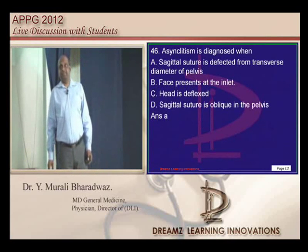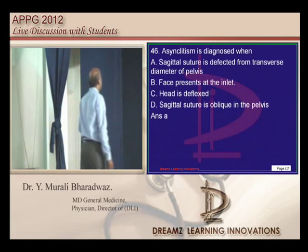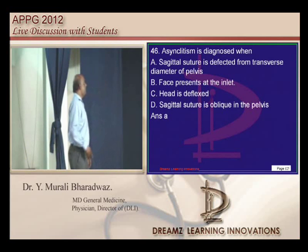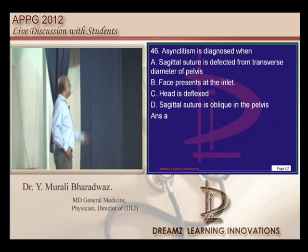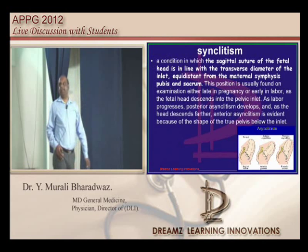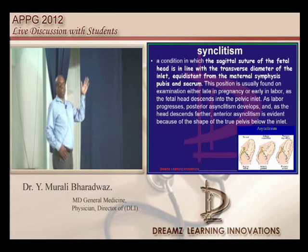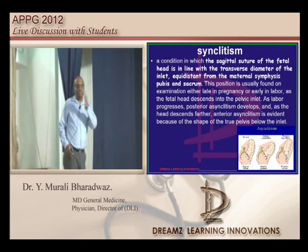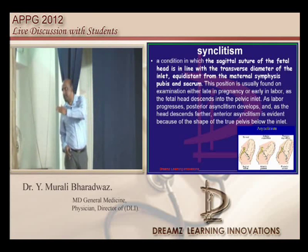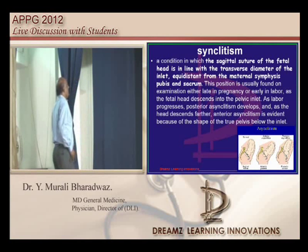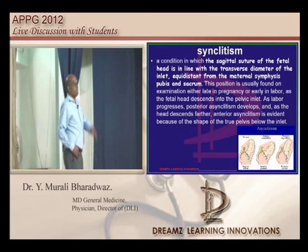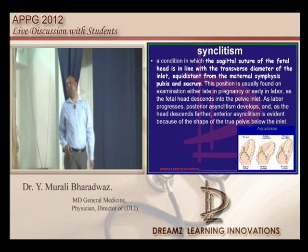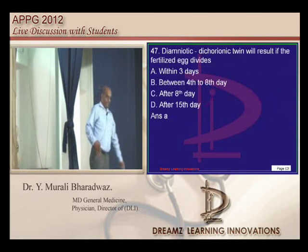Asynclidism — the sagittal suture of the fetal head is normally in line with the transverse diameter of the inlet, equidistant from the maternal symphysis pubis and the sacrum. If it deviates toward either the symphysis pubis or the sacrum, you call it asynclidism. It is the sagittal suture deviated away from the transverse diameter that defines asynclidism.